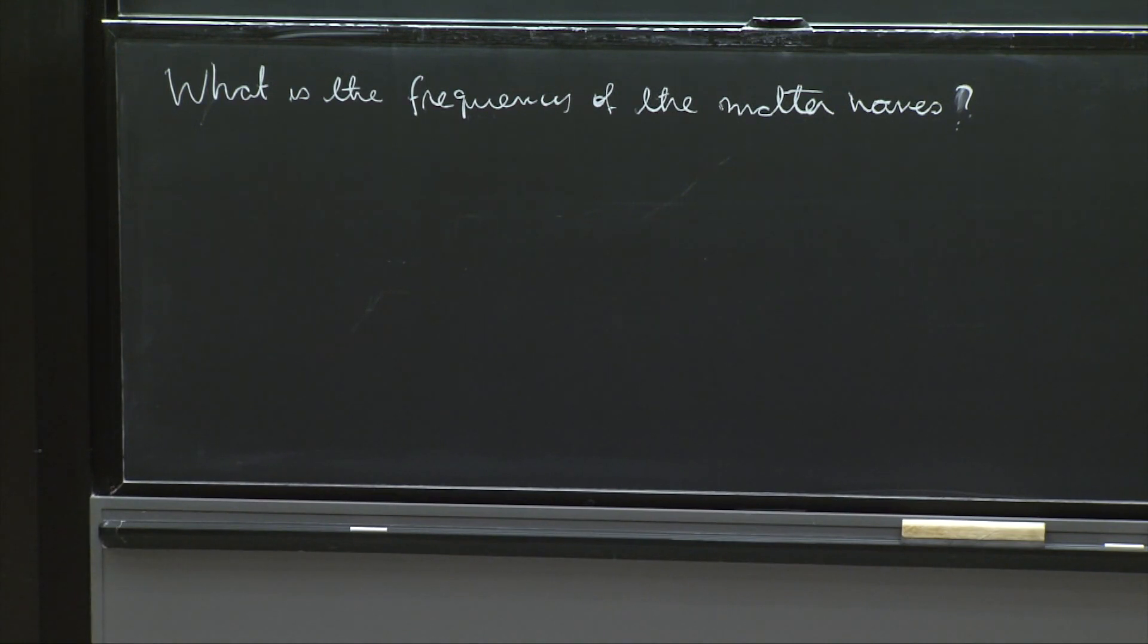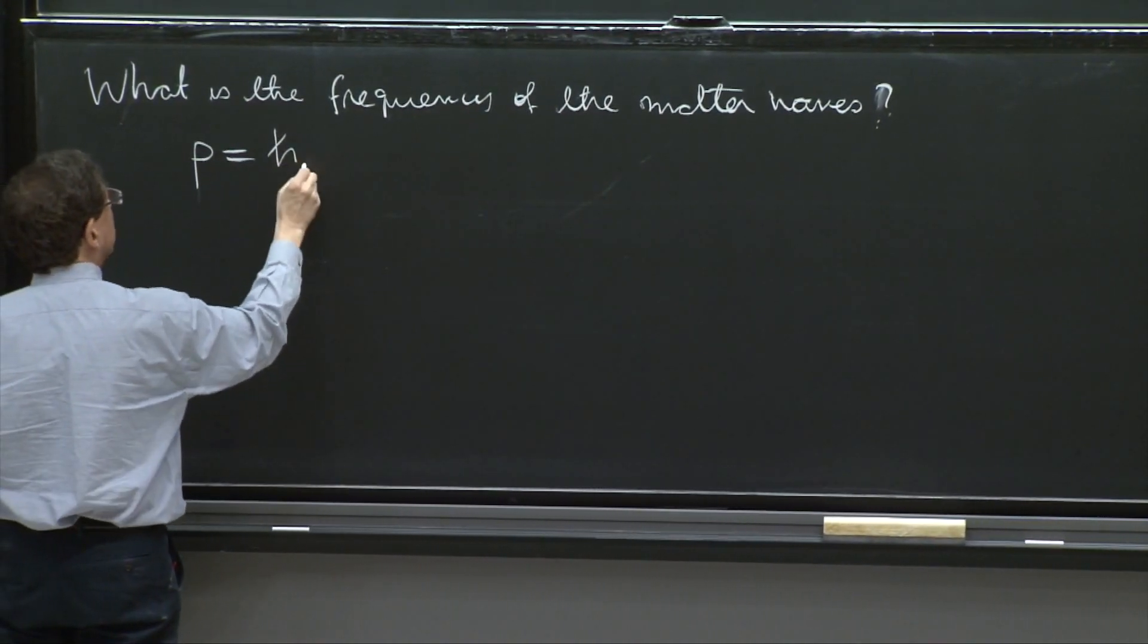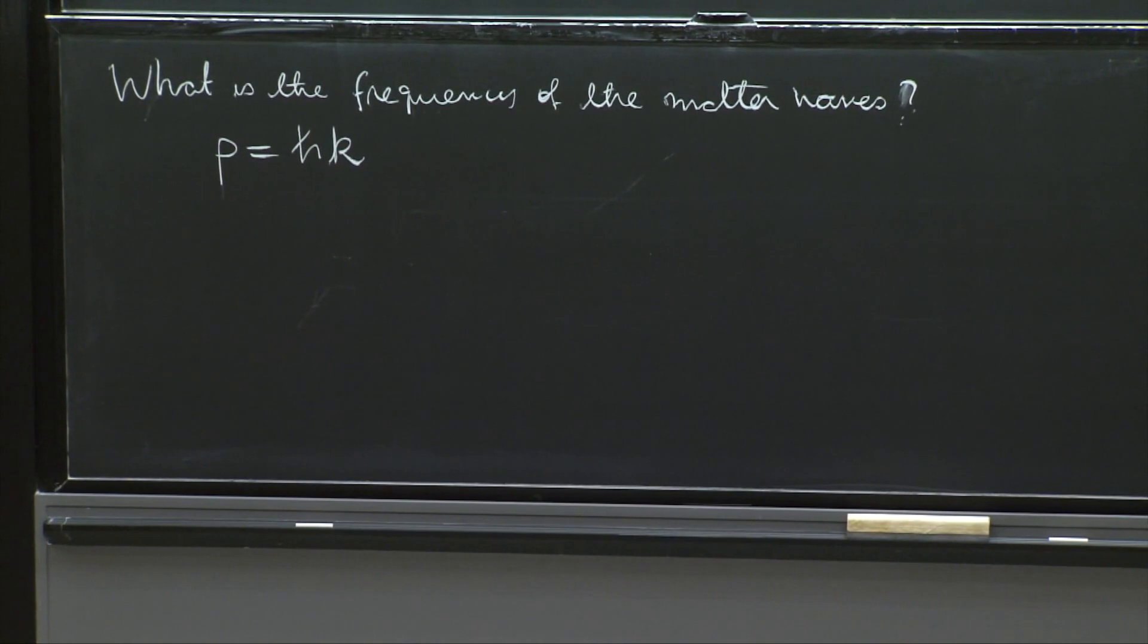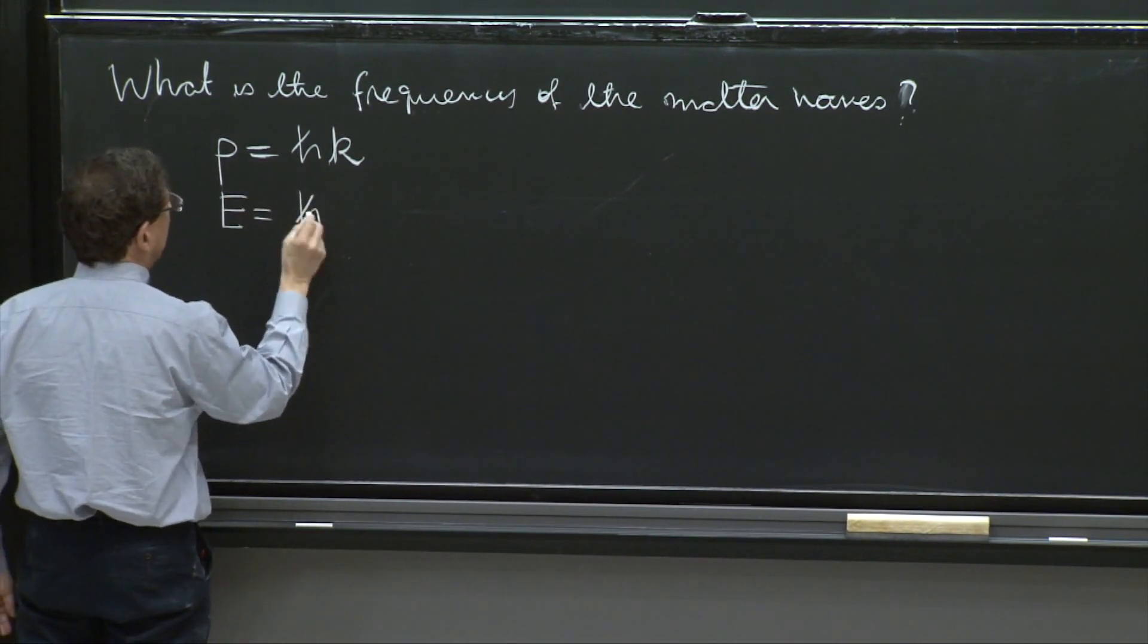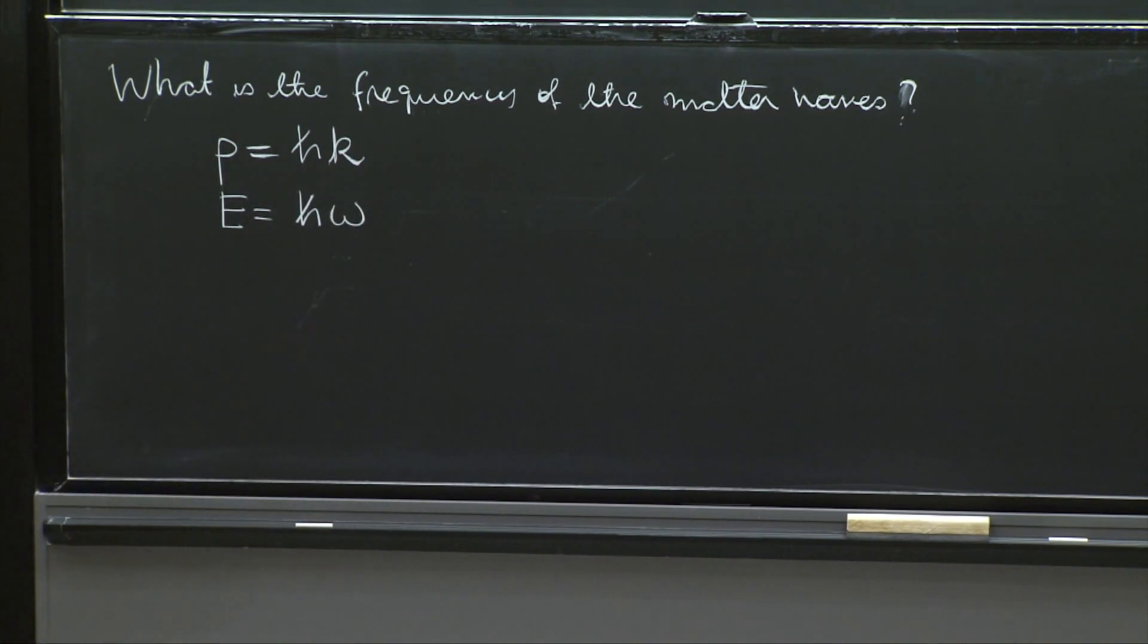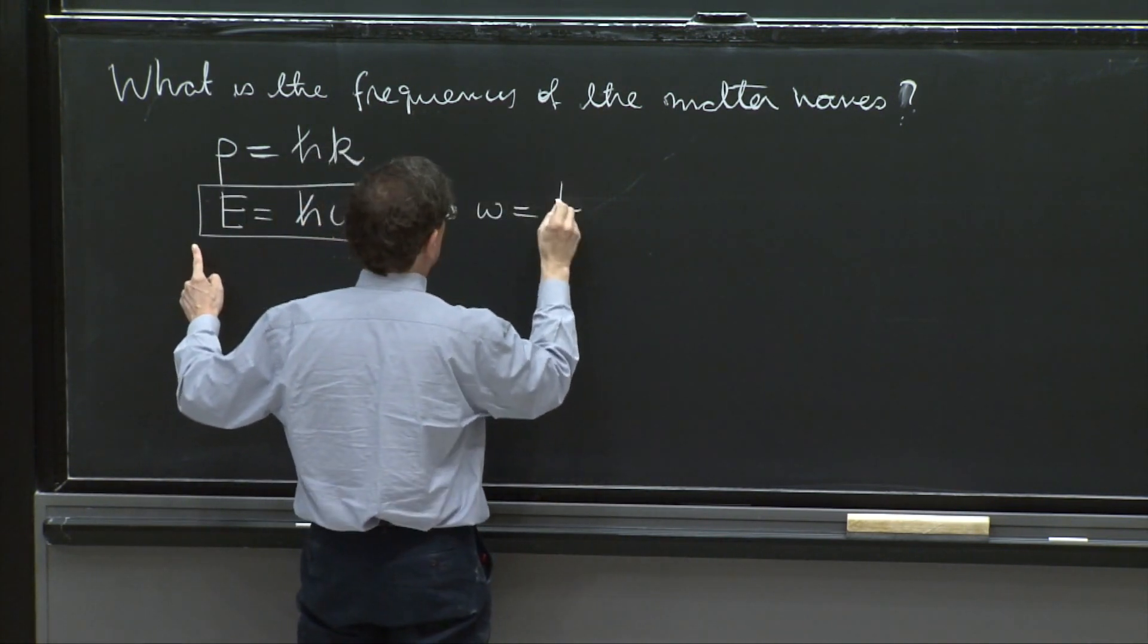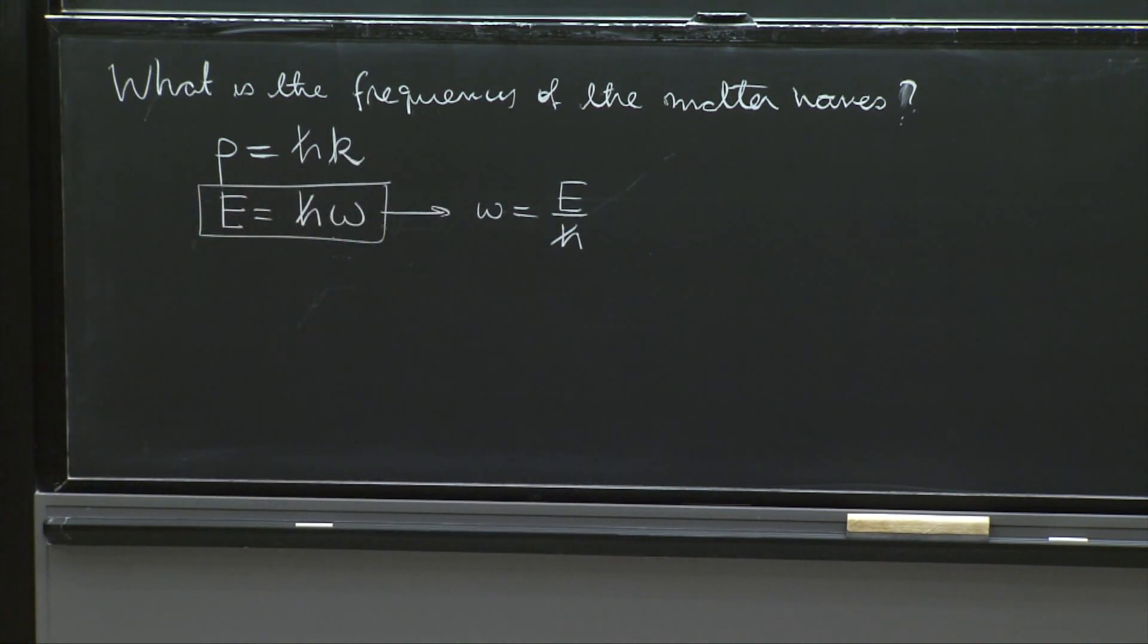So de Broglie did answer that same question. And the answer was obtained by analogy. We have p equal h bar k. And he said, well, just like the wavelength is determined by the momentum, we'll have E equal h bar omega. So this equation is the one that now completes the story. Omega is equal to E over h bar fixes omega in terms of the energy.